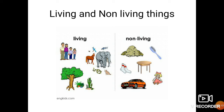Let us see the examples of living things. The examples of living things are humans, trees, and animals. The examples of non-living things are stone, paper, and book — all of these are examples of non-living things.